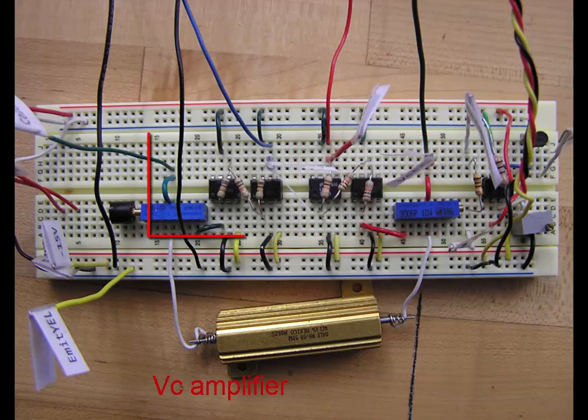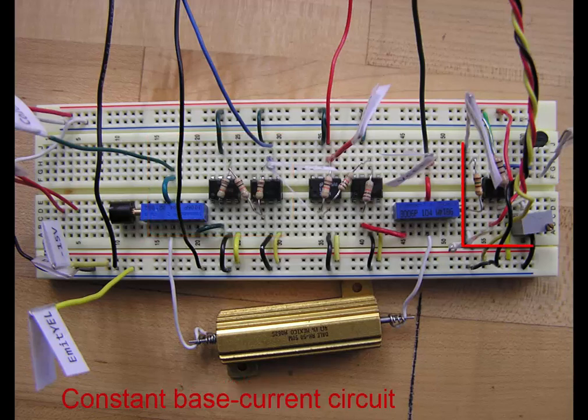There's the VCC amplifier, and that is the collector voltage amplifier, and the constant base current circuit.